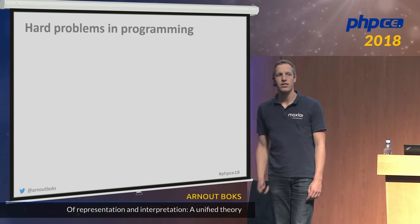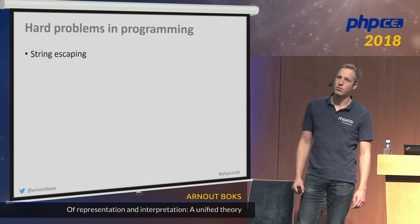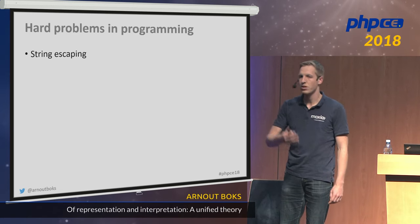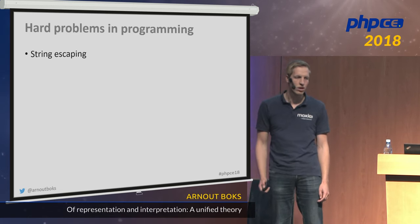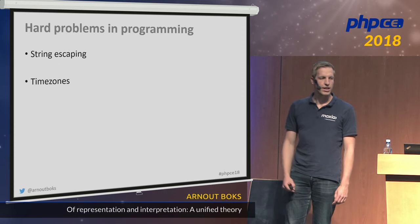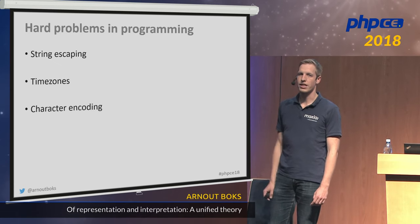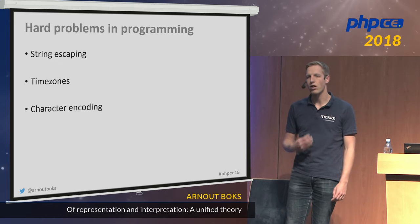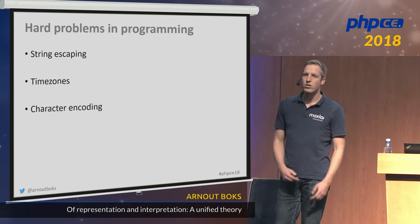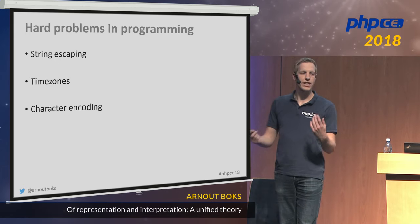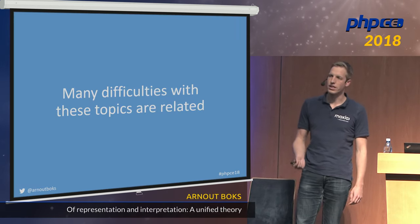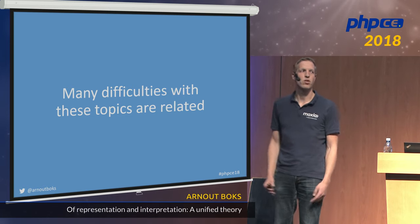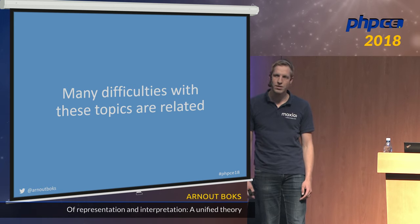Things like string escaping, especially if it's nested — if we have to escape strings for use in JavaScript within HTML or something. Stuff like time zones and handling datetimes, things like character encoding — these are also pretty hard problems that people often struggle with. My opinion is that many of these difficulties are related; it all kind of originates from the same source.